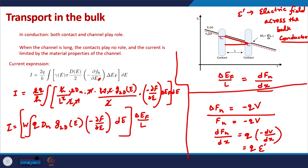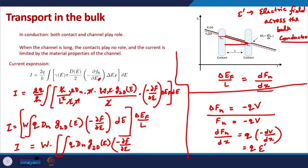Putting everything in, we can replace δE_F / L by dF_n/dx. For a 2D channel: I = q × D_n × integral of [G_2D(E) × (−∂F/∂E) dE] × (dF_n/dx). Dividing and multiplying by q, the term (1/q)(dF_n/dx) is essentially E′.